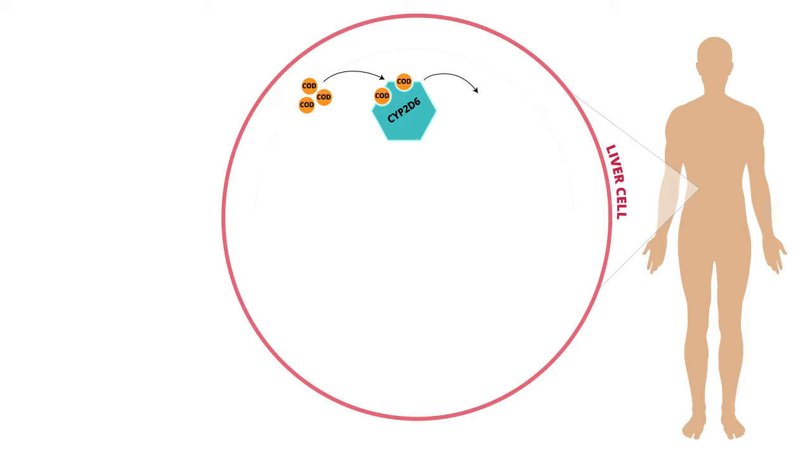This process produces the active metabolite morphine, which is then distributed throughout the body, where it binds to mu opioid receptors and exerts its pain-relieving effect.